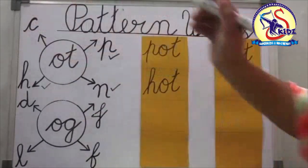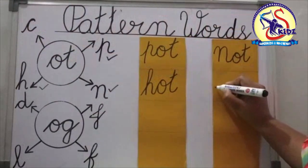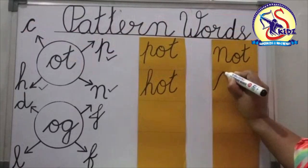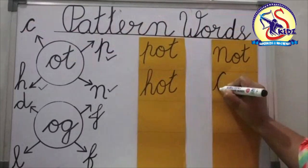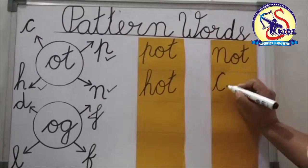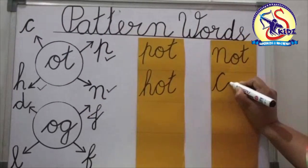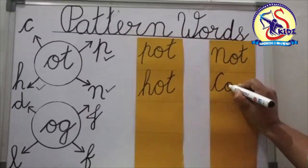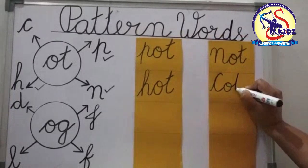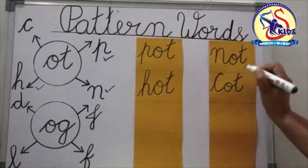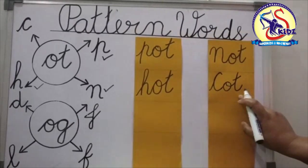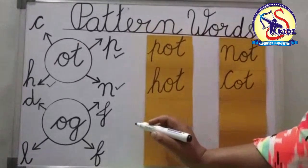Now see the next letter: C. We will join pattern O-T and get the word C-O-T, cot.